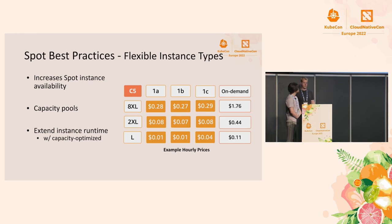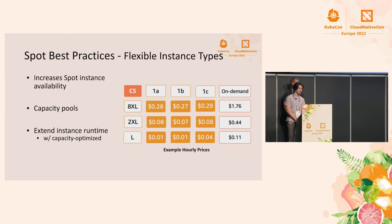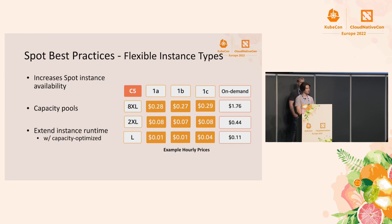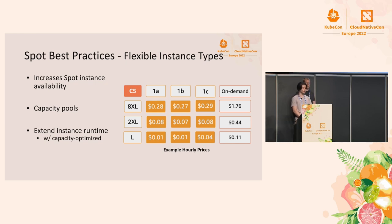Another best practice is flexible instance types. EC2 has a lot of VM capacity, and it's important to know how these are segmented across all regions through the concept of capacity pools — a tuple of availability zone and instance type. Each of those orange squares would be a capacity pool. If you have resource requirements, say you need at least a 2XL, the on-demand price might be 44 cents per hour. You can actually request a 2XL and also a 4XL, 8XL, and anything above, because the 8XL can still be cheaper than the 2XL due to the Spot discount.